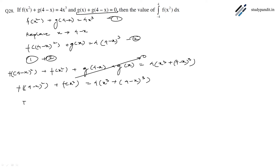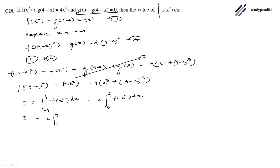Now we will let the integral I = integral from -4 to 4 of f(x²) dx. As the function is an even function, we can write I = 2 times the integral from 0 to 4 of f(x²) dx. Applying the property, we will also have the integral from 0 to 4 of f((4 - x)²) dx.